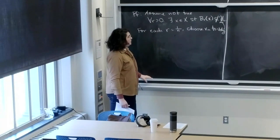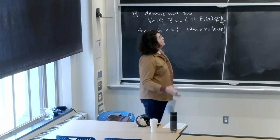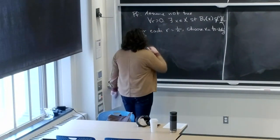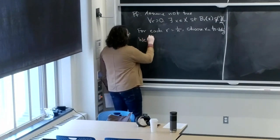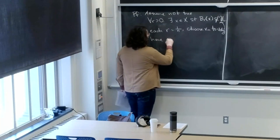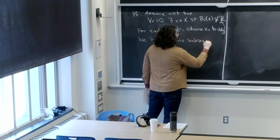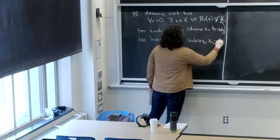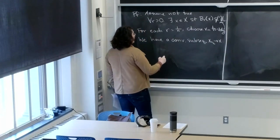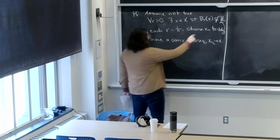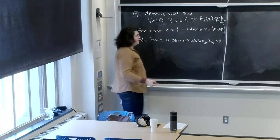So we're choosing points x_n such that the ball of radius 1/n around x_n is not contained in any of the U_i's. We know this is possible since 1/n is greater than 0. What are we going to do with the sequence? We take a convergent subsequence, using the fact that we're sequentially compact. Let's call it x_{n_k} converging to x.